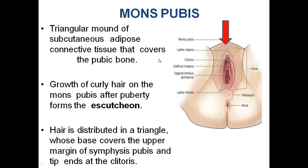Let us discuss each part in detail. First of all, we will discuss mons pubis, which is a triangular mound of subcutaneous adipose connective tissue that covers the pubic bone. After puberty, curly hair grows on the mons pubis. Hair is distributed in a triangle whose base covers the upper margin of the pubic symphysis and the tip ends at the clitoris.